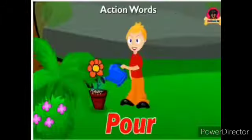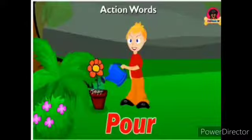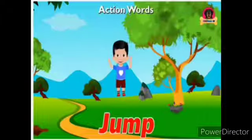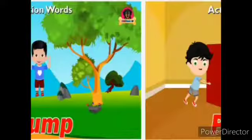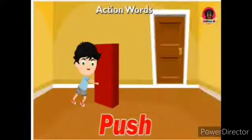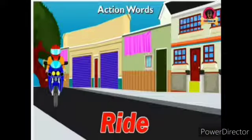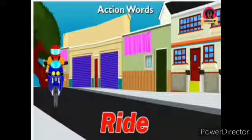For example, pour. The girl is doing some work — she is pouring water to the plant. The boy is jumping; he is doing some work — it is an action word. Push: the boy is pushing the cupboard; he is doing some work, that is called an action word, a verb. Ride: the boy is riding the bicycle — that is an action done by the boy, it is a verb.